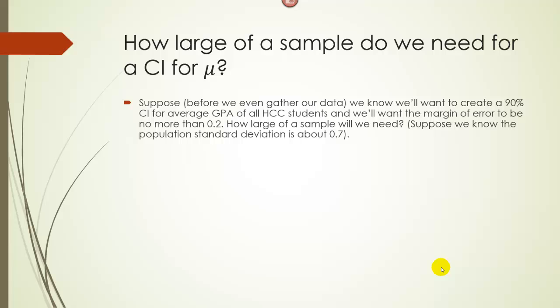So suppose, for example, before we even gather our data, we want to create a 90% confidence interval for the average GPA of all HCC students, and we want the margin of error to be no more than 0.2 grade points. So how large of a sample do we need?